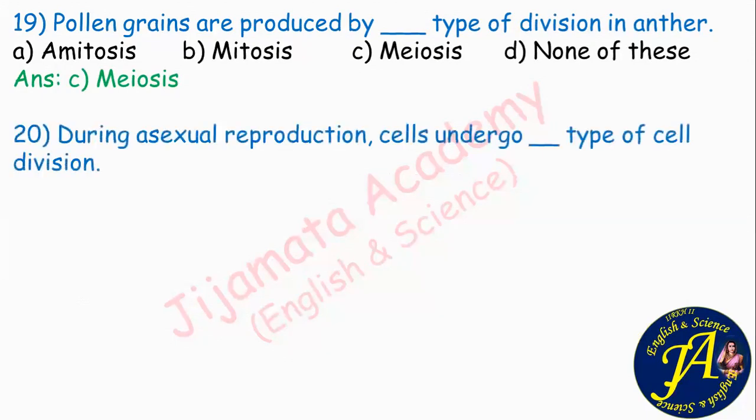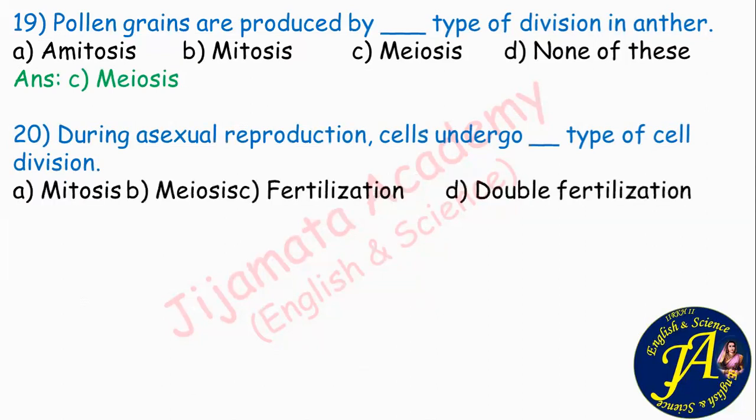During asexual reproduction, cells undergo dash type of cell division. Options are mitosis, meiosis, fertilization, double fertilization. During asexual reproduction, cells are produced of the same type, so the answer is option A: mitosis.